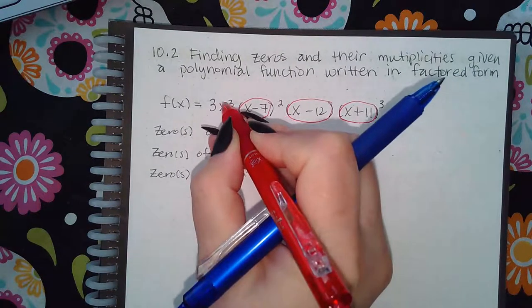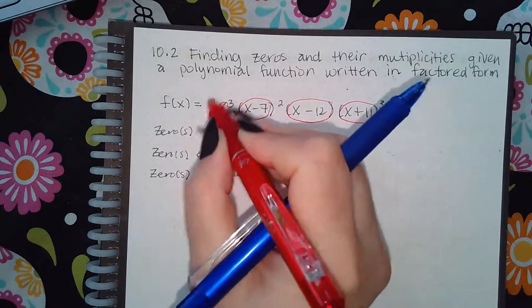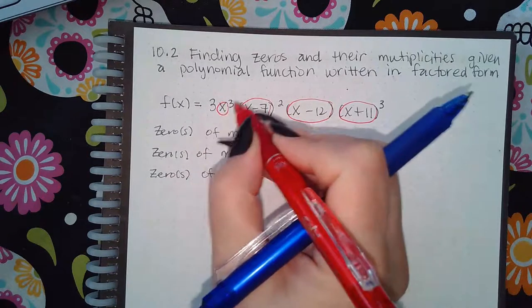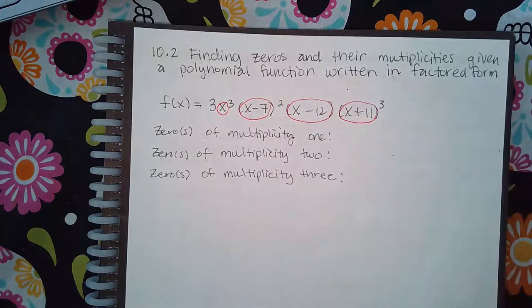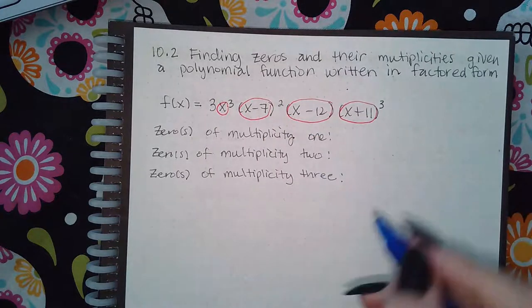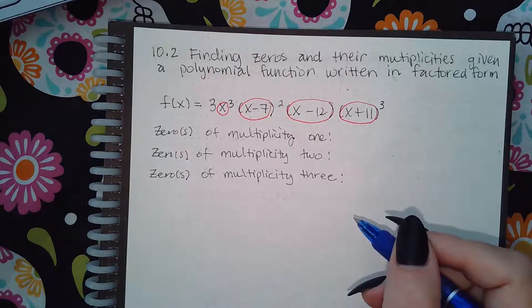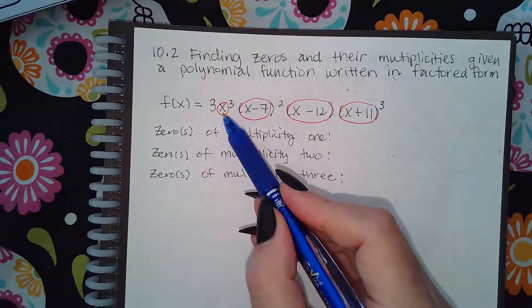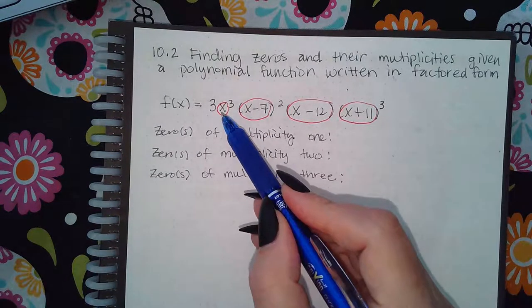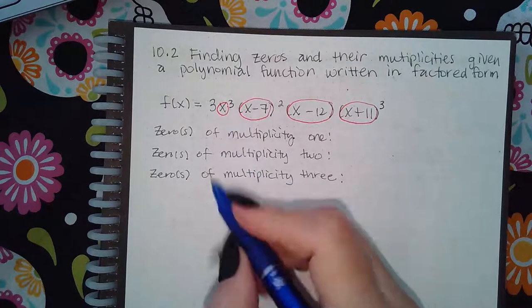Because if it were three and the x all in parentheses, the cube would apply to the three as well, but it doesn't. It just applies to the x because there are no parentheses around the three and the x. So if I take this factor, the variable part of the factor, equal to zero.